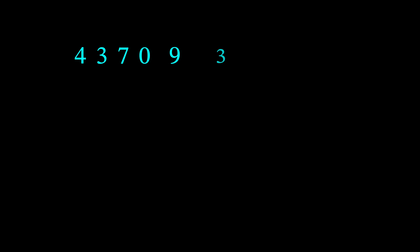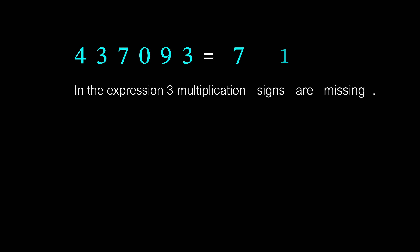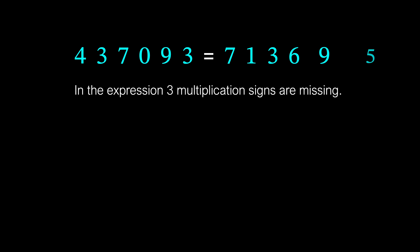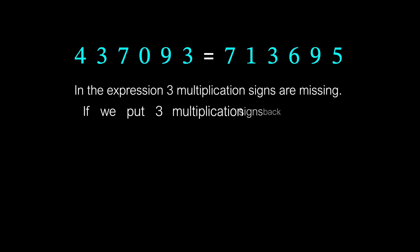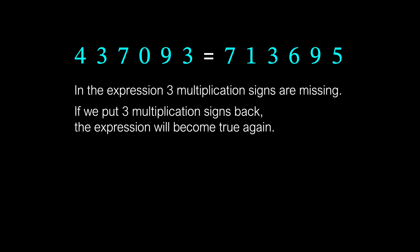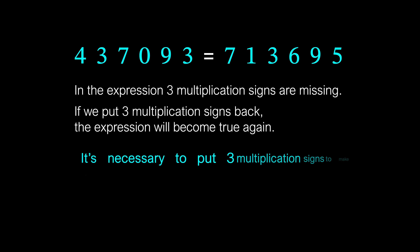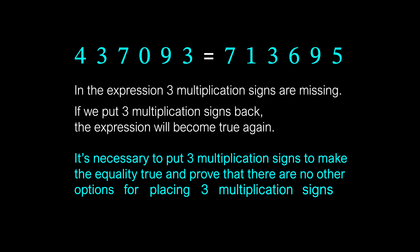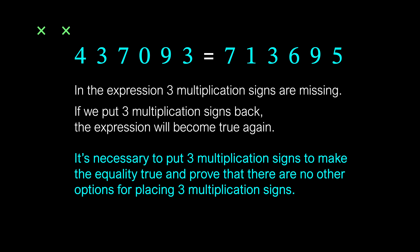We are given an expression in which 3 multiplication signs are missing. If we put 3 multiplication signs back, the expression will become true again. It is necessary to put 3 multiplication signs to make the equality true and prove that there are no other options for placing the multiplication signs. This math problem was at a math olympiad for middle school students.